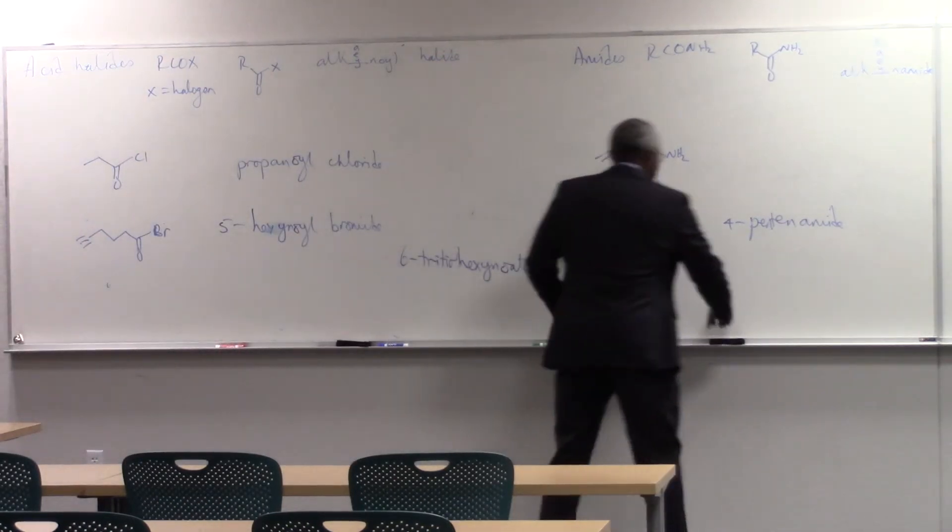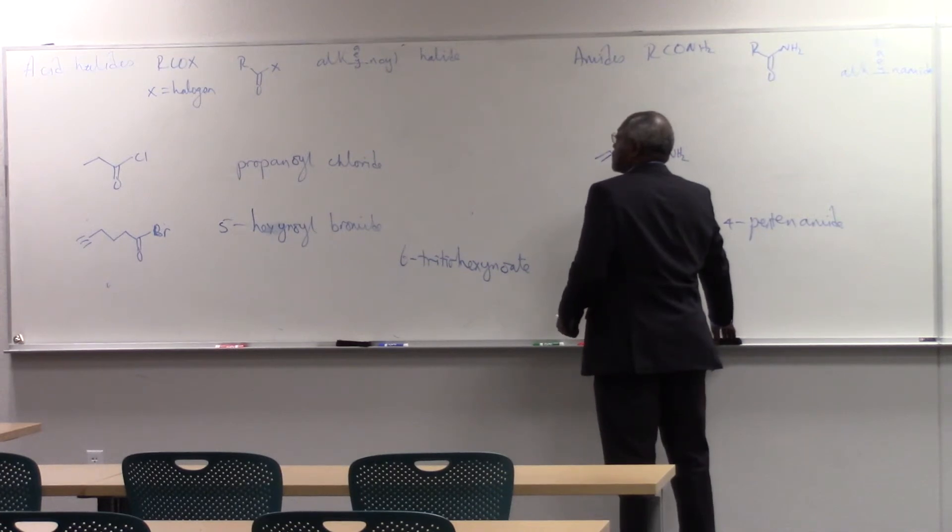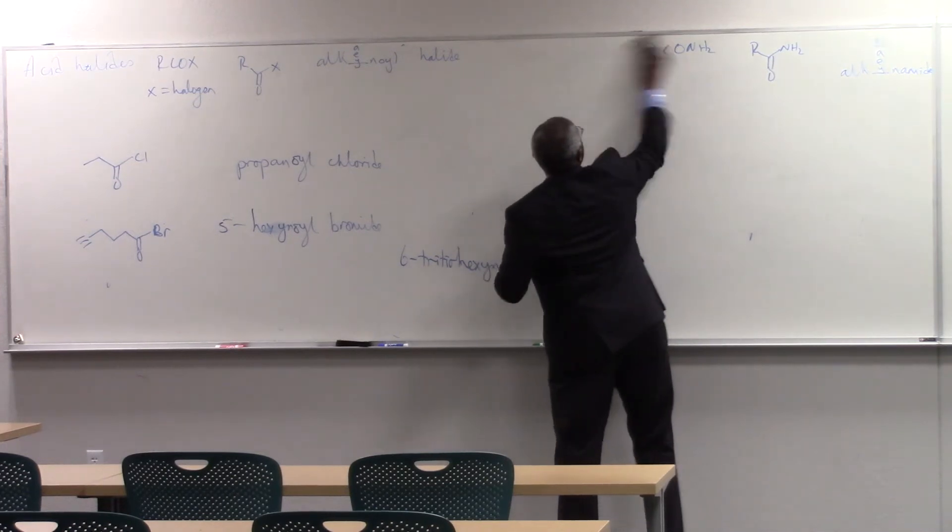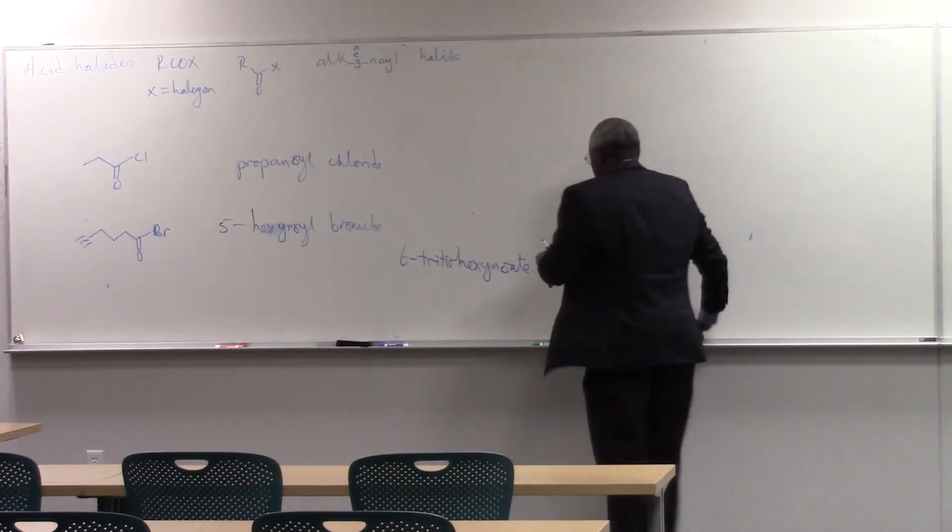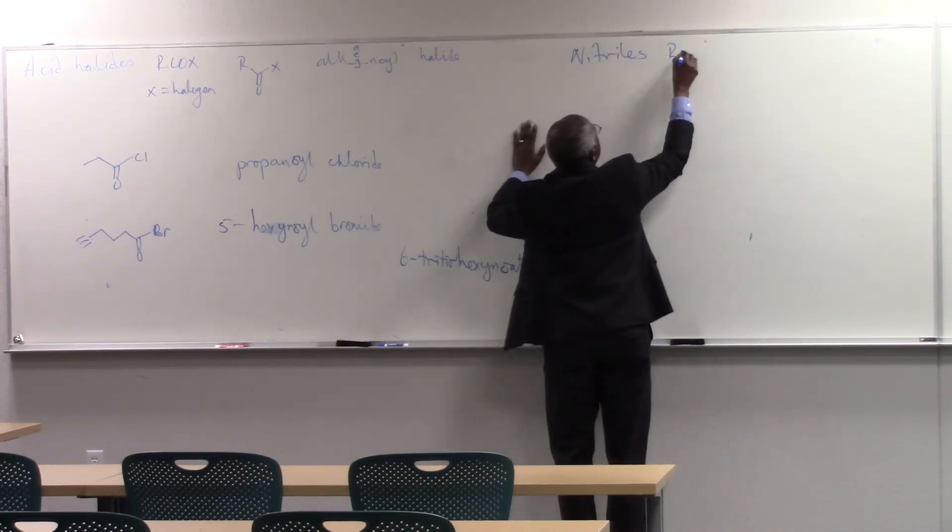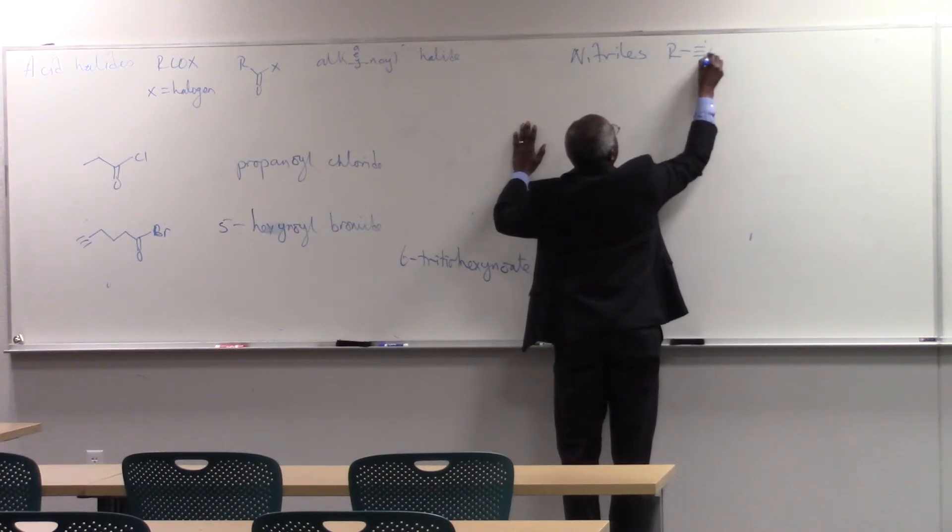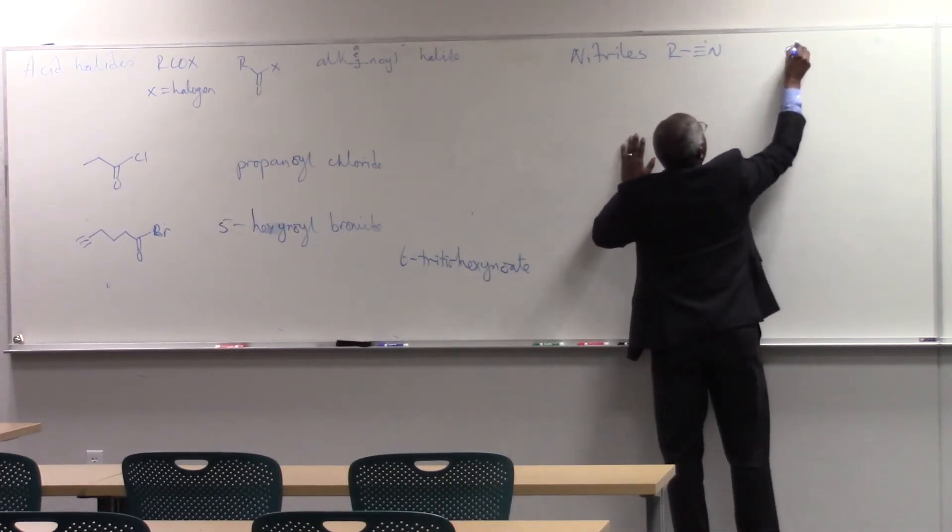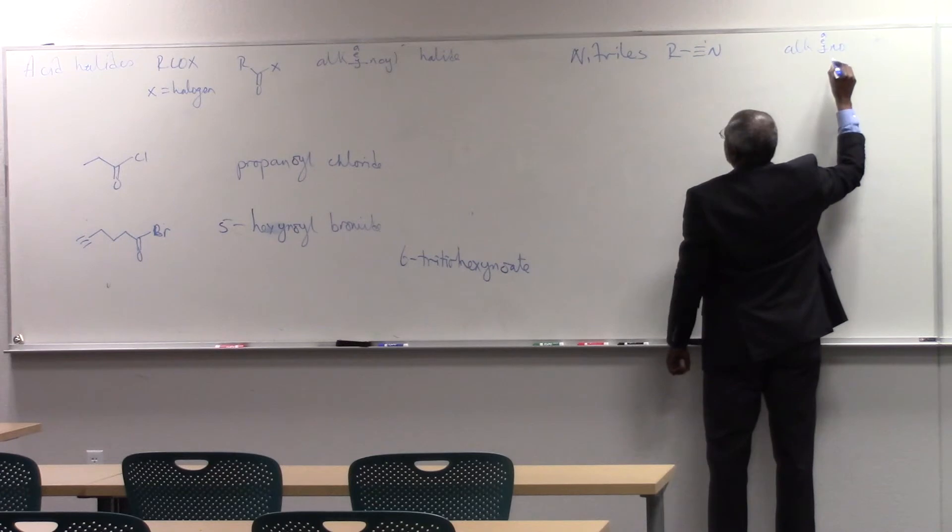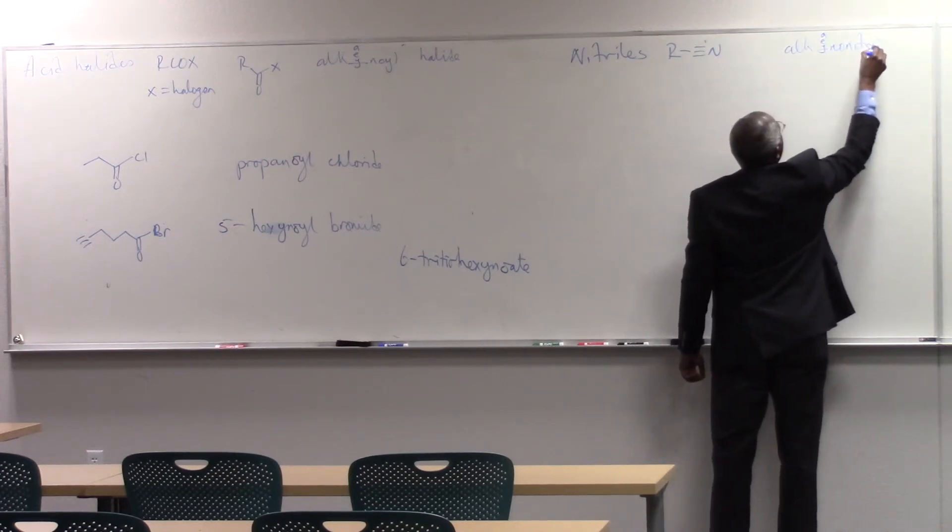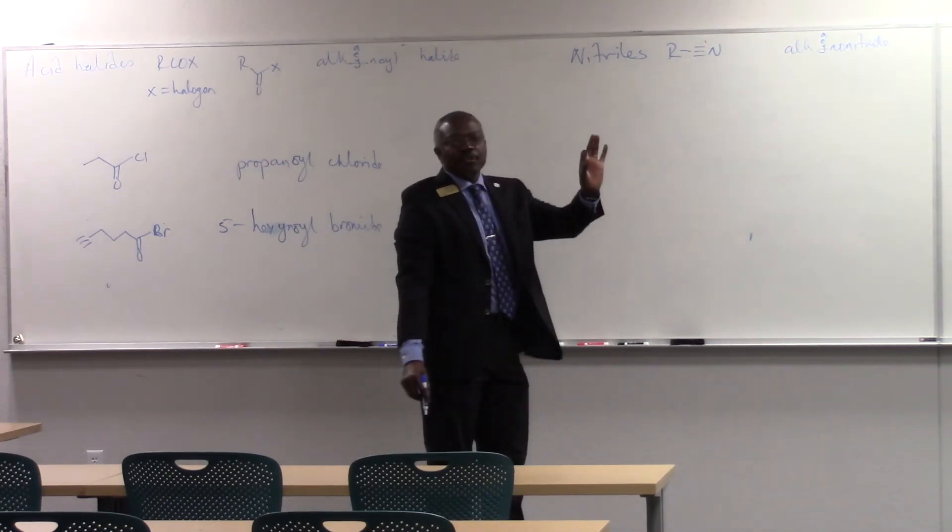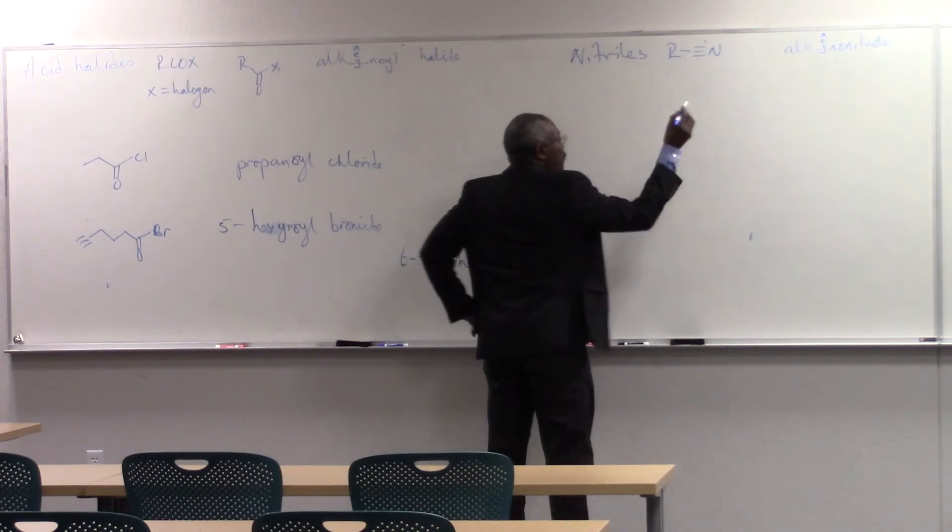Nitriles. And then the last, the last of the lot, hope I missed anybody out. The last of the lot are nitriles. Which are R, C-triple-bond, N, and they're called alk, something A-E-Y, nitrile. So it's an alkanonitrile, alkenonitrile, alkinonitrile. So just a couple quick examples, all the rules apply.